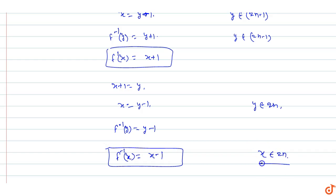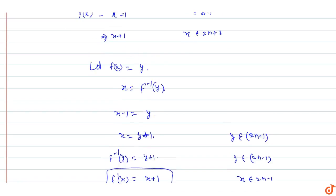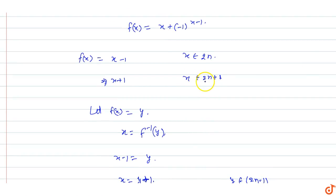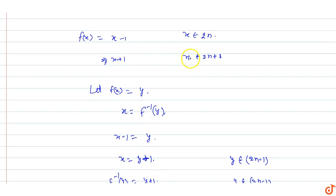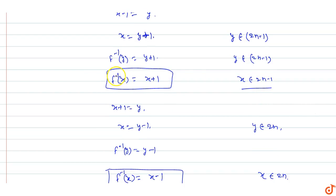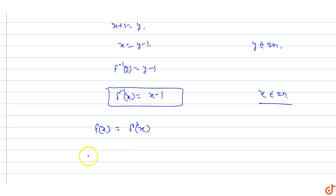So from this, x belongs to 2N (even numbers) and x belongs to 2N minus 1 (odd numbers). The condition is: f inverse of x equals x plus 1 when x belongs to odd numbers (2N minus 1), and f inverse of x equals x minus 1 when x belongs to even numbers. So f(x) equals f inverse of x, and both equal x plus (-1) raised to power x minus 1.